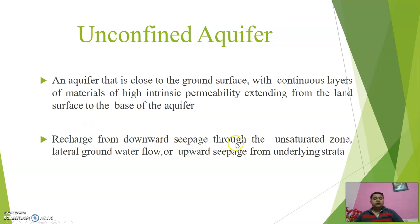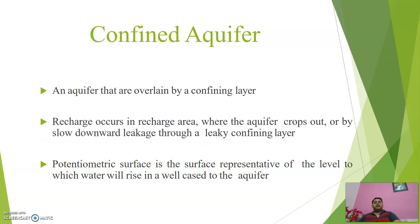Recharge of the unconfined aquifer occurs through three main methods: first, downward seepage through the unsaturated zone; second, lateral groundwater flow; and third, upward seepage from underlying strata. For the confined aquifer: the confined aquifer is bounded by a confining layer — the water is confined on both sides by an impermeable layer so it cannot easily pass to adjacent strata. Recharge occurs in the recharge area where the aquifer crops out, or by slow downward leakage through a leaky confining layer.